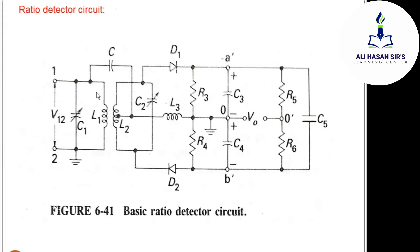The parallel combination of an inductor and capacitor is known as a tuned circuit. In the ratio detector circuit we have a capacitor C1 which varies the input. The circuit uses a transformer with primary winding for input and secondary winding for output.